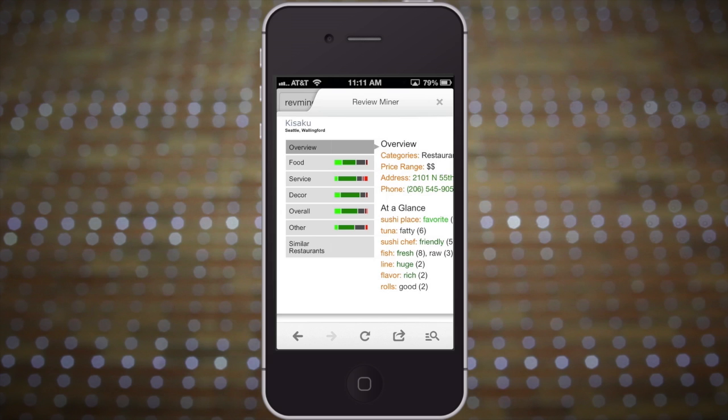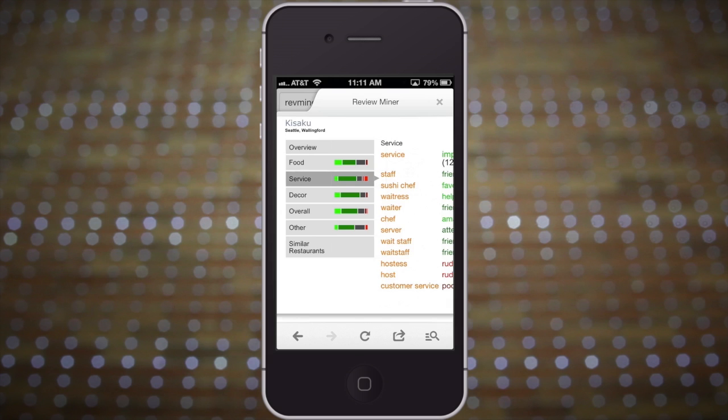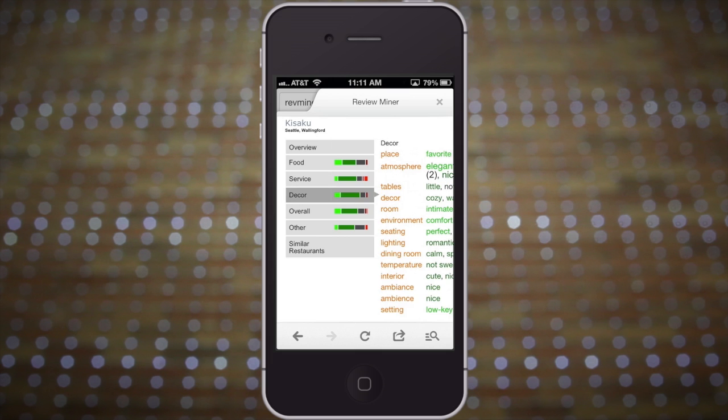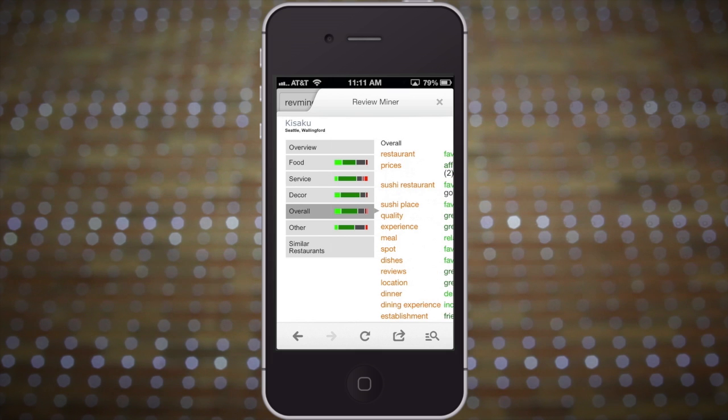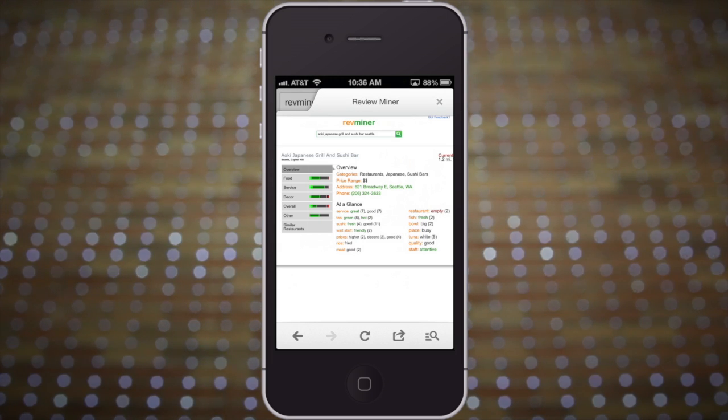So there's sentiment analysis, and we automatically capture the strength of the sentiment. We sort by that, normalize for the number of reviews, and give you what we think is the best sushi place in Seattle.